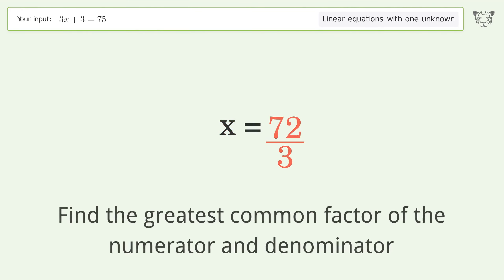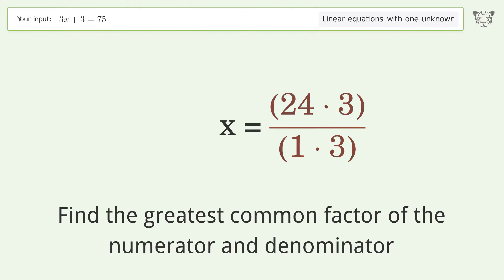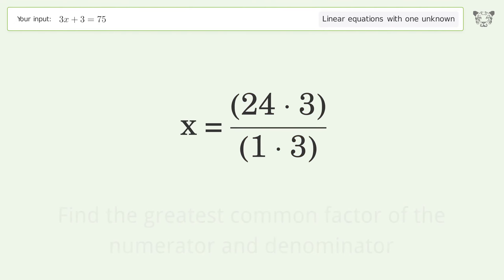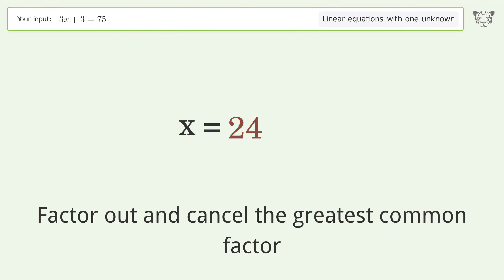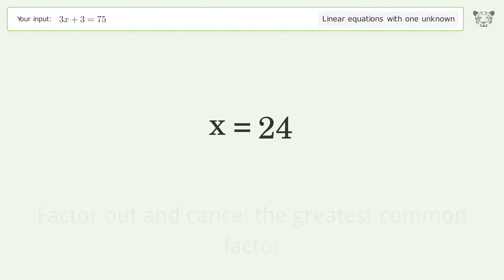Find the greatest common factor of the numerator and denominator, then factor out and cancel the greatest common factor. The final result is x equals 24.